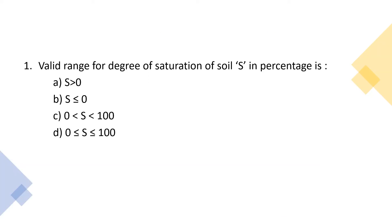First question: what is the range for degree of saturation of soil, represented as S in percentage? Option A: S > 0; B: S ≤ 0; C: S between 0 and 100; D: 0 ≤ S ≤ 100. The degree of saturation can be equal to 0, equal to 100, or any value in between, so the answer is option D. It is a basic but important question.